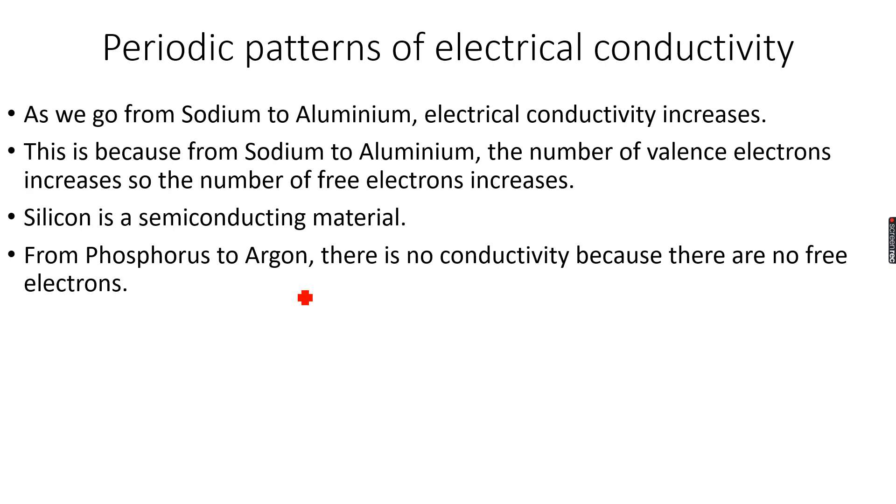Silicon is actually a semiconducting material, which means it conducts under certain conditions. From phosphorus to argon, there is no conductivity in electricity because there are no free electrons, no ions, nothing. Therefore phosphorus to argon, no conductivity of electricity.